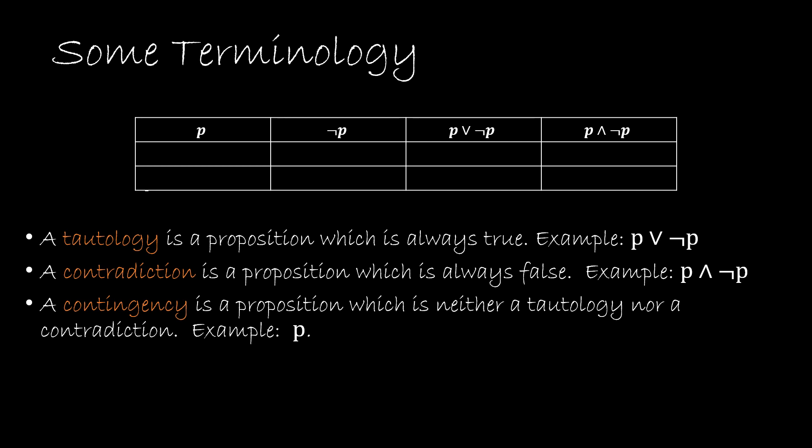In a truth table we're always going to give all of the possibilities on the left side. Here I have just one proposition which is P, and so all of the possibilities of P are true and false. Just keep in mind that we take 2 to the n, where n is the number of propositions. Here we just had 1, so 2 to the first, and that's why there are two rows.